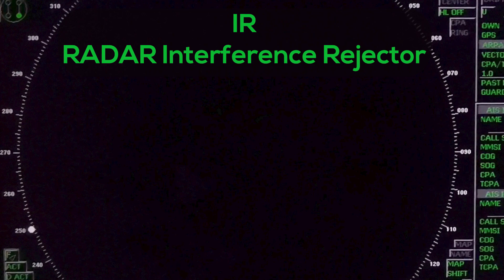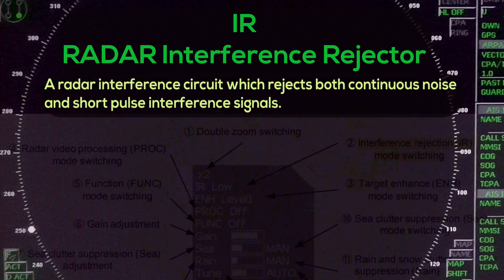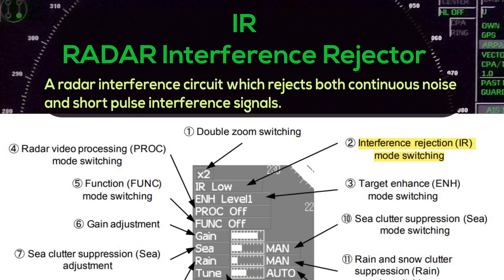IR — Radar Interference Rejector: a radar interference circuit which rejects both continuous noise and short pulse interference signals.